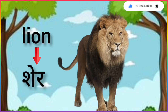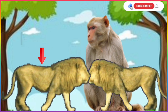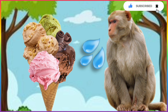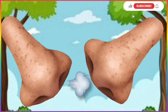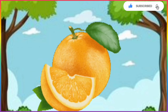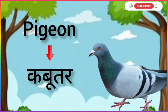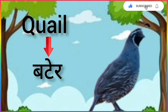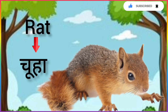L for Lion, Lion means Sher. M for Monkey, Monkey means Bandar. N for Nog, Nog means Snag. O for Orange, Orange means Santra. P for Pigeon, Pigeon means Kabutar. Q for Quail, Quail means Butter.